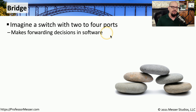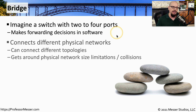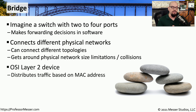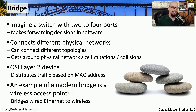Most of the forwarding decisions on where data is sent take place in the software of the bridge. Bridges can connect similar networks or different topologies together. Because the bridge makes forwarding decisions based on a MAC address, we refer to it as an OSI Layer 2 device.